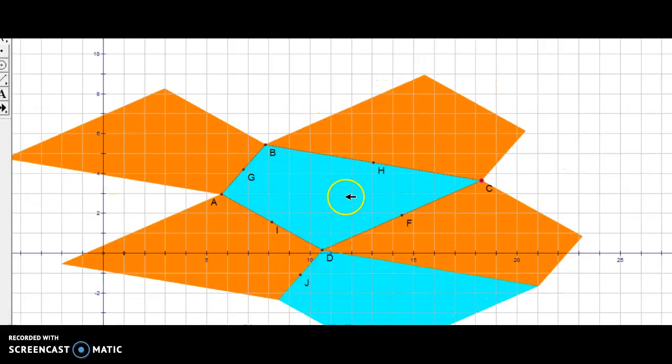So the key to tessellating a quadrilateral is rotating by 180 degrees around each side of the quadrilateral. And that gives you the new one.